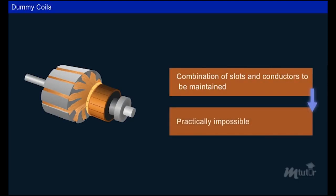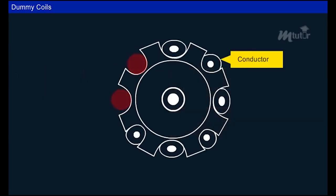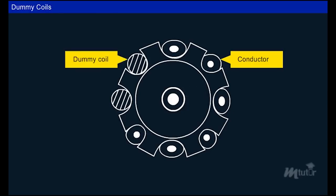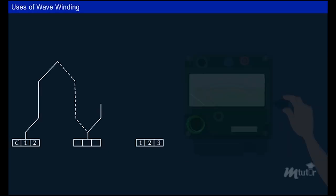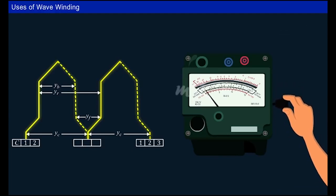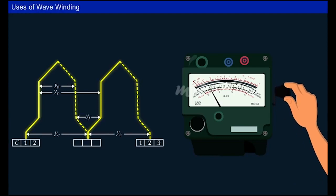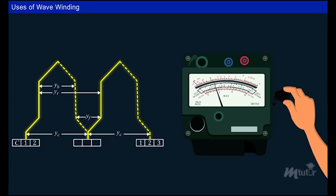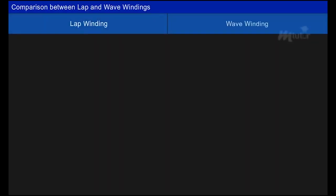For wave-type armature winding, a specific combination of slots and conductors is required. Practically it may not be possible to meet such design requirements, so to provide mechanical balance, one or more coils may be inserted in appropriate slots, electrically insulated from other windings — these are called dummy coils. In wave winding, coils are connected in series, so the voltage of each winding adds up while the current remains the same. Therefore, wave winding is used in high-voltage, low-current applications such as hand-cranked megohm meters for providing high test voltages.